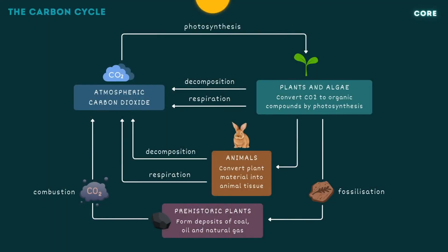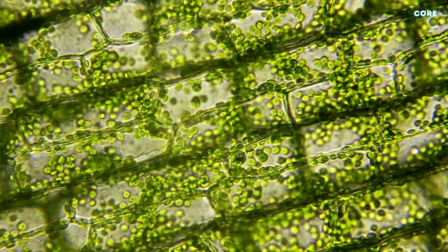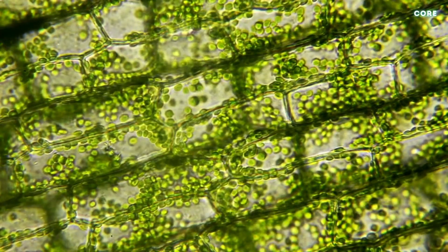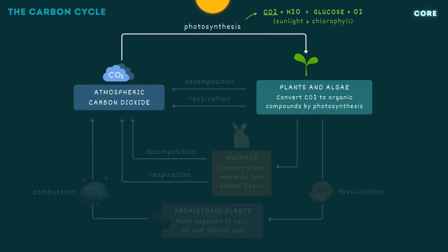The carbon cycle is the natural process through which carbon, the main element in all organic compounds, moves between the earth's atmosphere, plants, animals and the environment. The cycle begins with photosynthesis which removes carbon from the atmosphere and incorporates it into plant biomass. Plants, algae and some bacteria convert carbon dioxide into glucose using sunlight, water and chlorophyll. Some of this glucose is changed into other compounds including starch, cellulose and proteins.